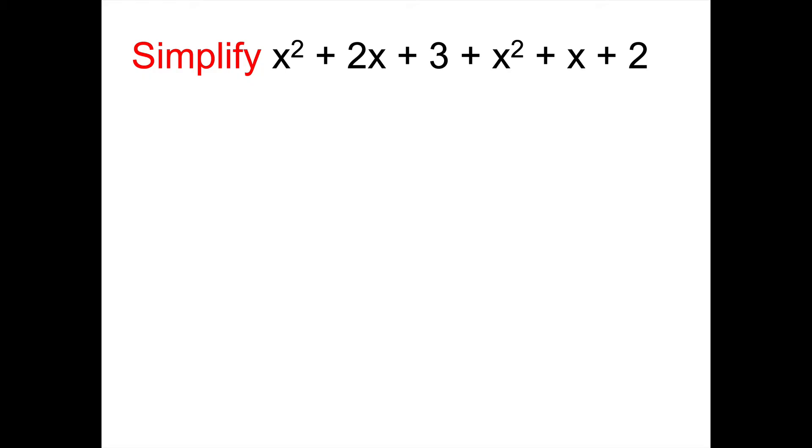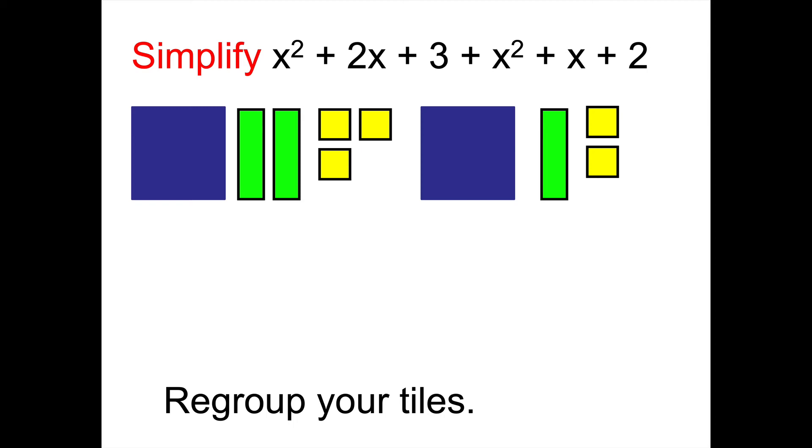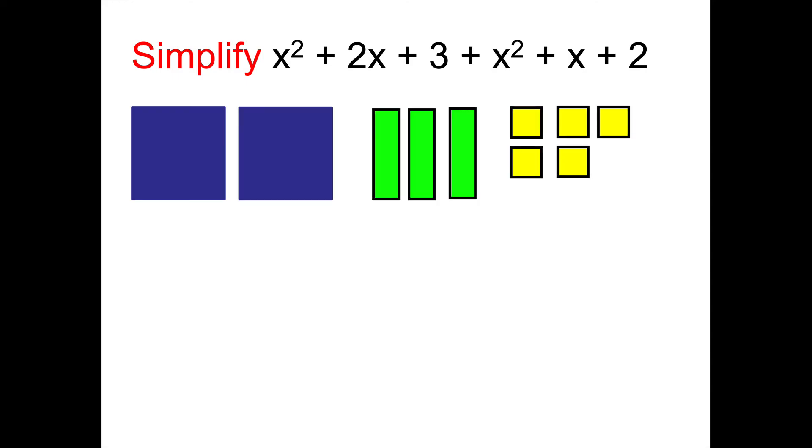Let's do one more example with algebra tiles. So I'm going to make tiles for x squared plus 2x plus 3 plus another x squared plus x plus 2. And we want to regroup our tiles to put the ones that are like each other together. And just like the first metaphor, I can see that there are three kinds of tiles here. So I should have three groups. I have like this after I regroup it. So let's go through and say what we have.